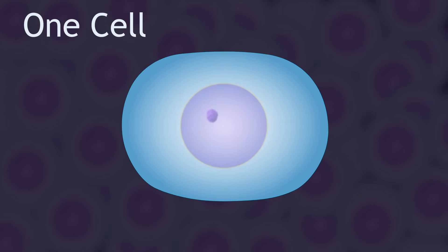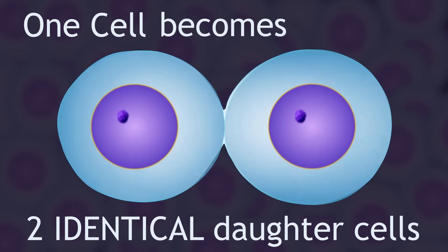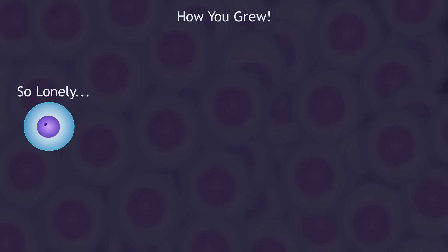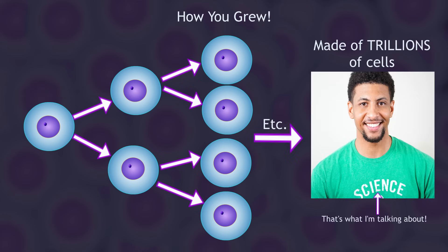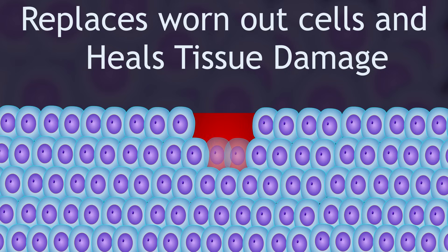The purpose of the cell cycle is to reproduce cells, so one cell can copy itself to become two cells. Those two daughter cells are identical to the original parent cell — exactly the same. Each one can complete its own cell cycle to make copies of itself until you end up with lots of cells. This is needed for growth and is how you went from being one single cell to being made of trillions of cells. We also need the cell cycle to replace worn-out cells and heal tissue damage.